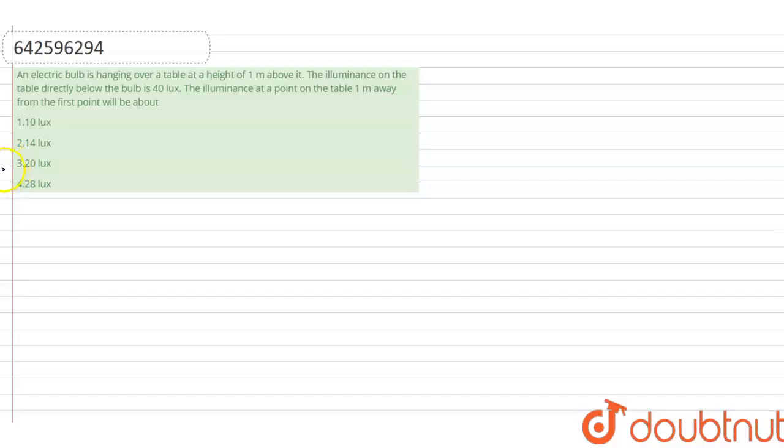In this question, it says that an electric bulb is hanging over a table at a height of one meter above it. The illuminance on the table directly below the bulb is 40 lux. So the illuminance at a point on the table one meter away from the first point will be?